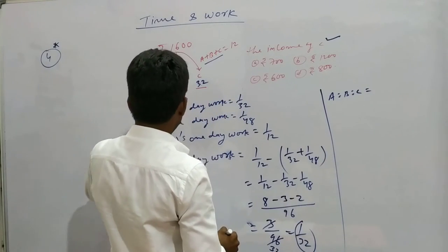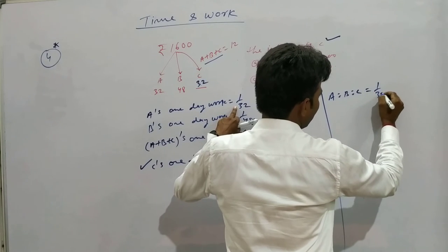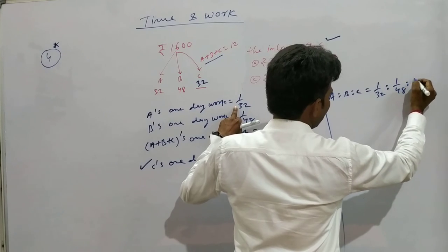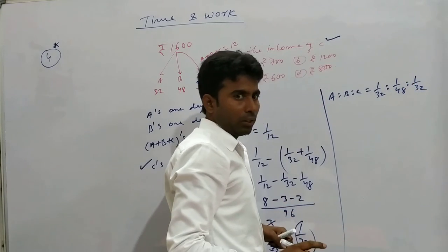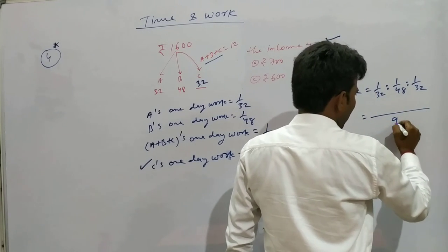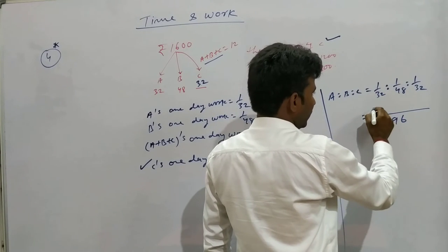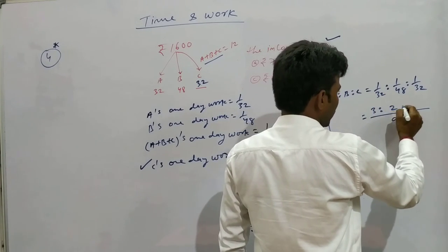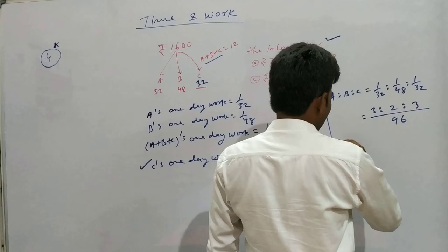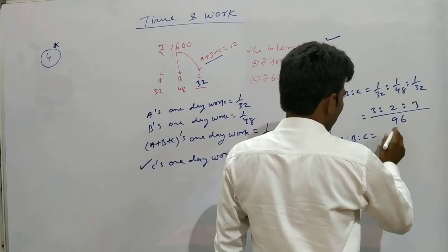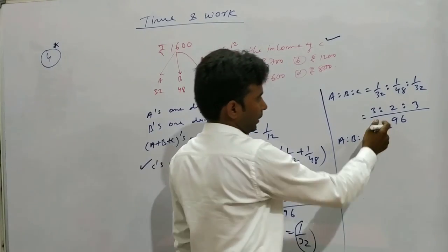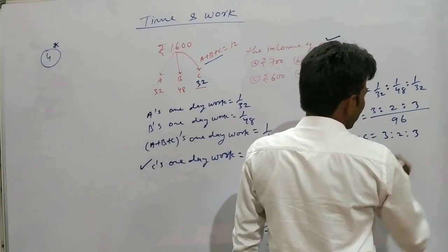The ratio equals 1 upon 32 to 1 upon 48 to 1 upon 32. Taking LCM, this becomes 3 to 2 to 3.